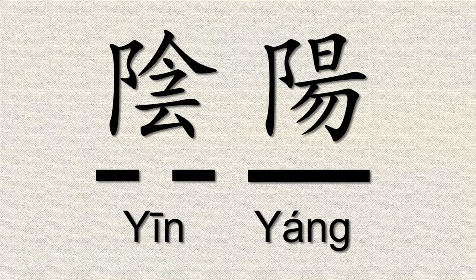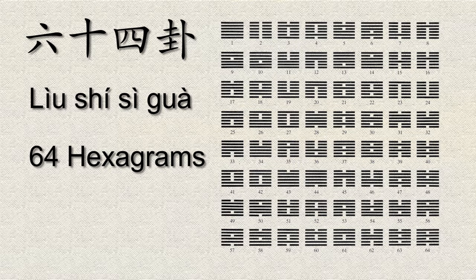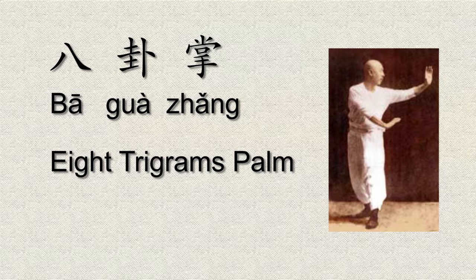In the Book of Changes, yang is represented by a line, and yin is represented by a broken line. These lines are put together to make eight trigrams, or ba guà, which represent some of the fundamental elements of the universe. These eight trigrams are then put together to make 64 hexagrams, which represent all the possible changes in the cosmos. In ancient China, this system was used in feng shui, war strategies, and divination. These trigrams were also used to create the eight mother palms of the martial art ba guà zhang, or eight trigrams palm.